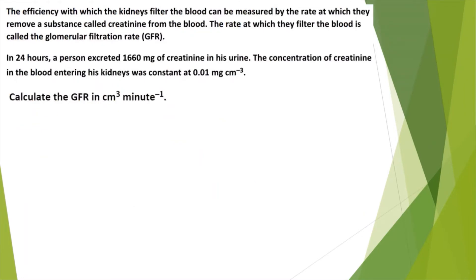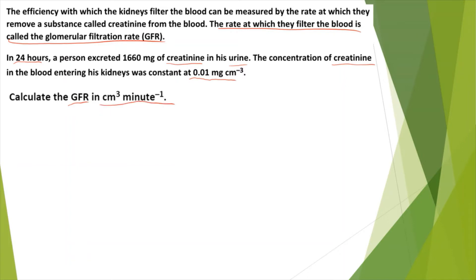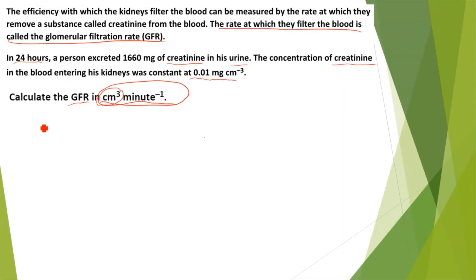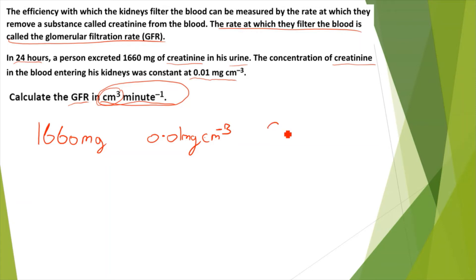For this next question, it first tells me what GFR is. It then says that in 24 hours, a person excreted 1660 milligrams of creatinine in his urine, and the concentration of creatinine in the blood entering his kidneys was constant at 0.01 mg per centimetre cubed. It's asked me to calculate the GFR in centimetres cubed per minute to the power of minus 1. So writing down what I have: 1660 mg, then 0.01 mg per centimetre to the power of minus 3, and 24 hours.